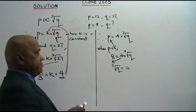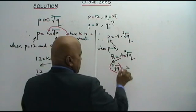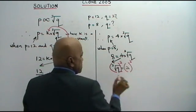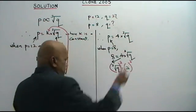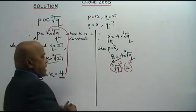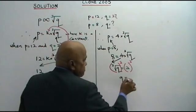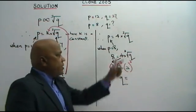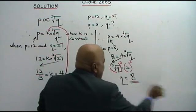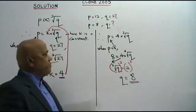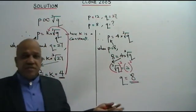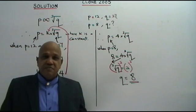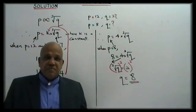We cube both sides. The cube root of Q, when cubed, gives Q. And 2 to the power of 3 is 8. So Q equals 8. That is your answer — as simple as that. Thank you.